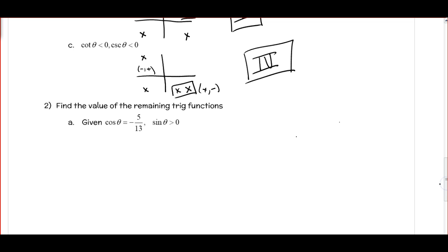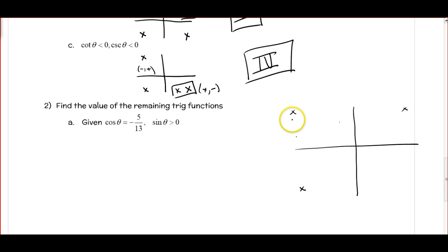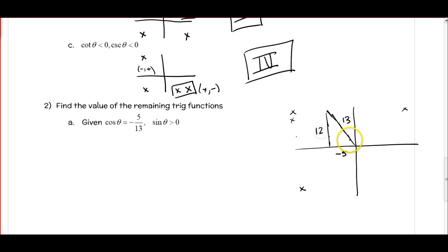For number 2, we want to find the remaining trig functions. We're given that cosine is negative — that's quadrant 2 or 3 — and sine is positive — that's quadrant 1 or 2 — so we must be in quadrant 2. I've drawn a triangle in the second quadrant. Cosine is x over r, so x is negative 5 and r is 13. Using the Pythagorean theorem, the remaining side is 12. Go ahead and find the remaining 5 trig functions, and we'll check them next time in class.